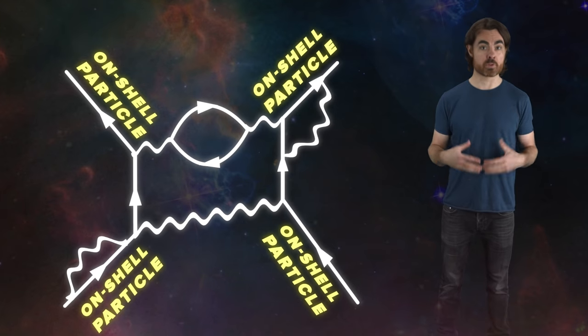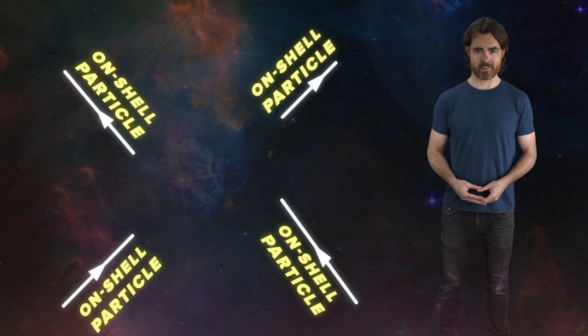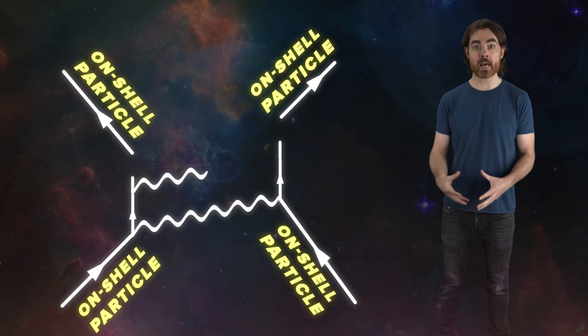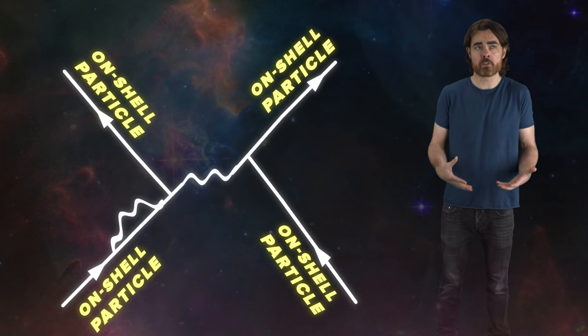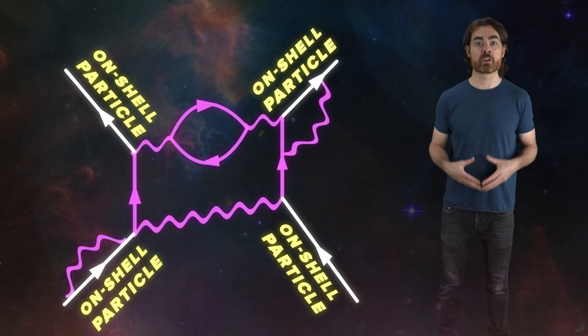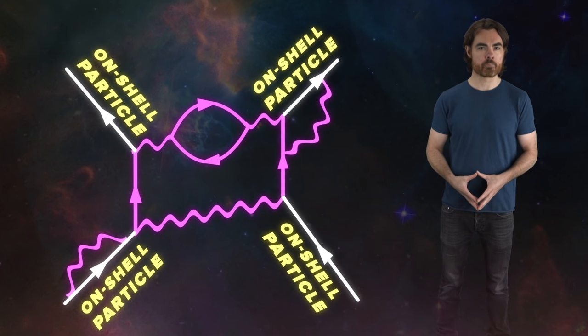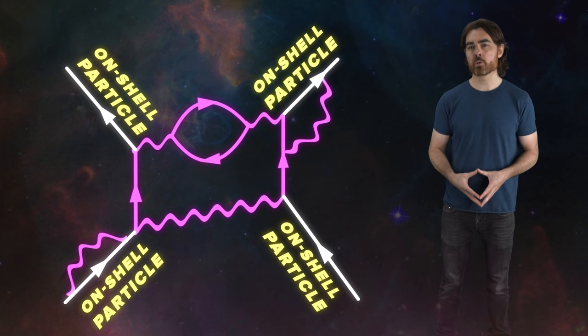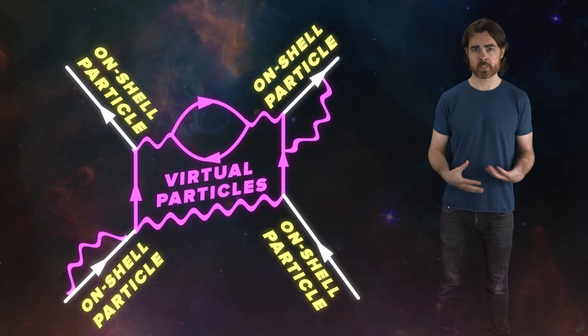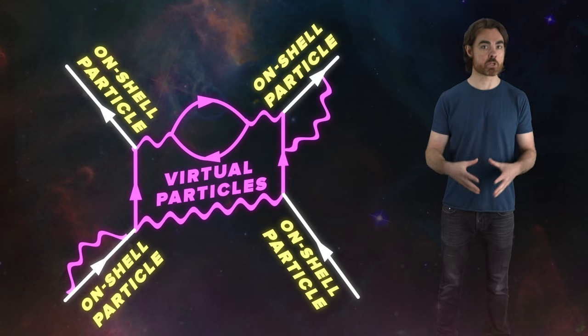On the other hand, everything that happens between the ingoing and outgoing tracks has questionable reality. Each possible diagram that results in the same ingoing and outgoing particles is a valid part of the possibility space for that interaction. The particles that have their entire existence between vertices within the diagram but don't enter or leave are called virtual particles. Their correspondence to anything resembling real particles is debatable.